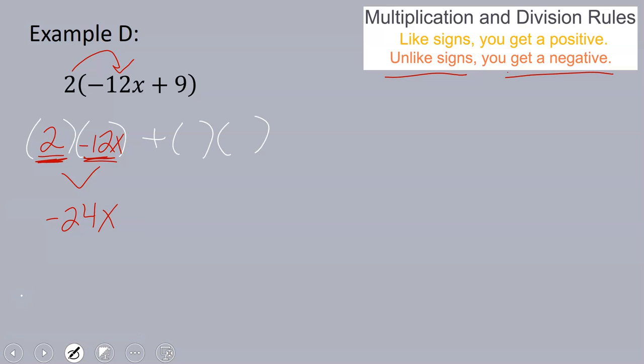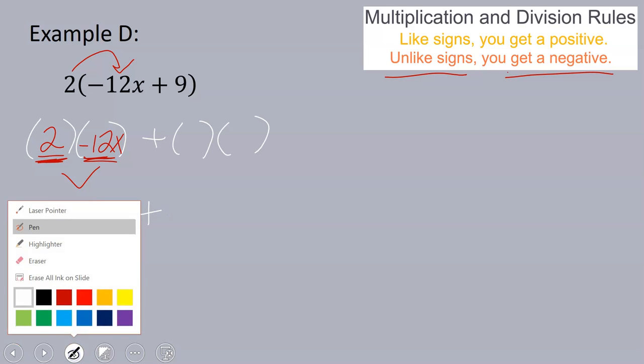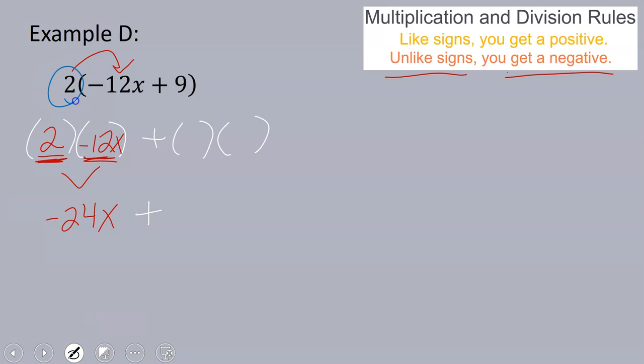I bring down the addition sign in between. And then I'm going to show that I'm multiplying the 2 by the 9. So 2 is being multiplied by 9, and 2 times 9 gives me 18.